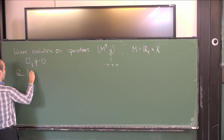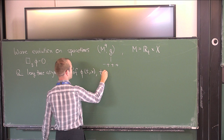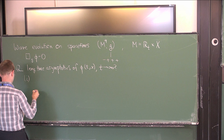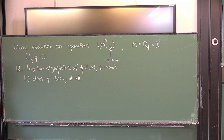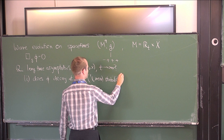The question is: what is the late-time or long-time asymptotic behavior of φ(t, x) as t goes to infinity? There are various ways in which you can make that question more precise. The first thing you might hope for or inquire about is whether φ decays at all — whether the amplitude of waves decays to zero when time goes to infinity.